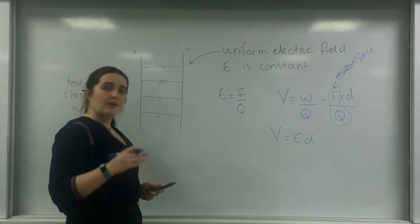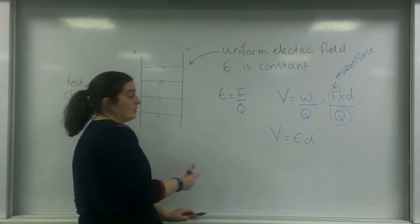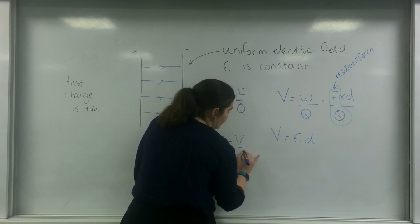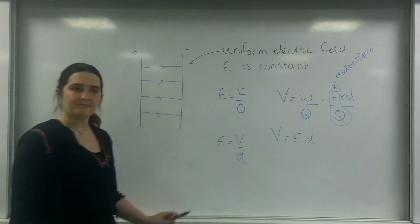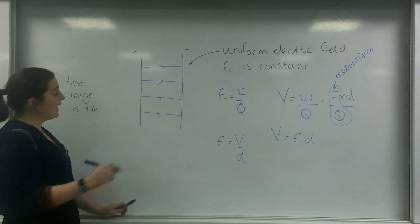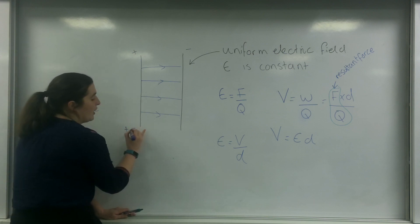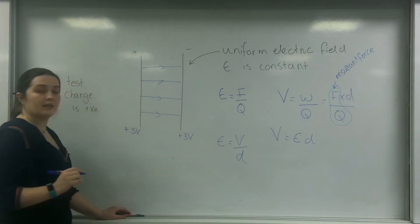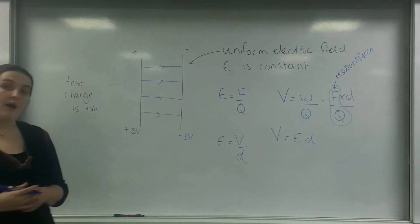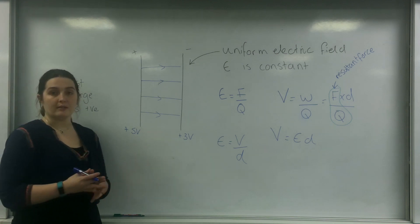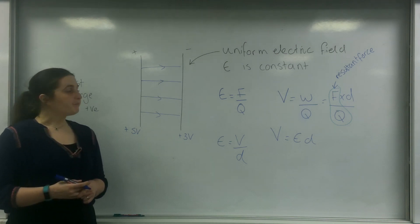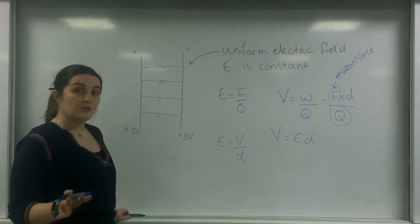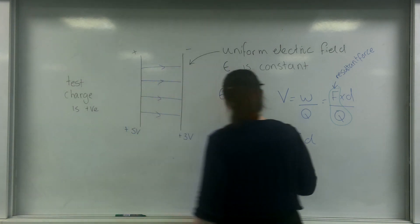So another formula for electric field strength is E is the potential divided by D. This means if I had plus five volts on this side and plus three volts on this side, I can work out the field strength between these two points. Please notice, this can only be used for uniform electric fields.